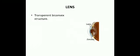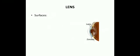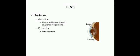The lens is a transparent biconvex structure placed between the anterior and posterior segments of the eye. It is circular in outline and one centimeter in diameter. It has two surfaces: the anterior, which is flattened by the tension of the suspensory ligament, and the posterior surface, which is more convex. It is enclosed in a transparent capsule.